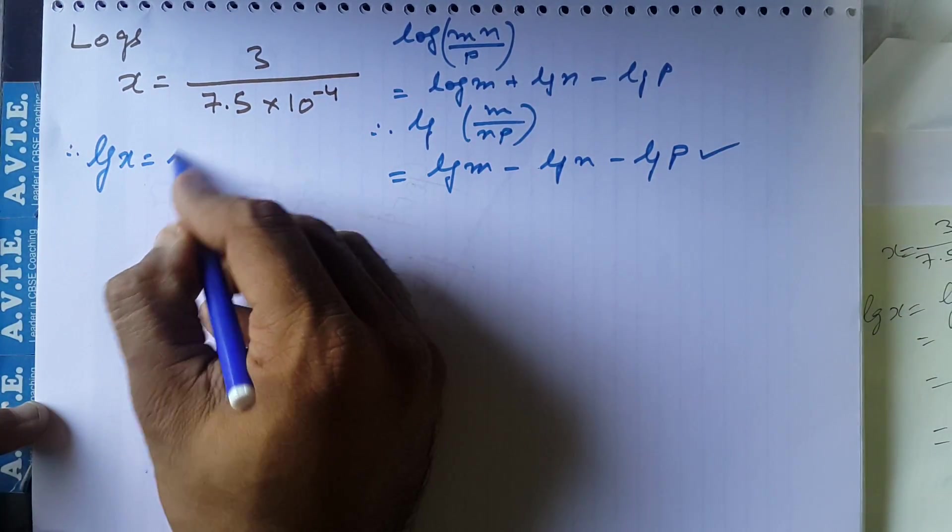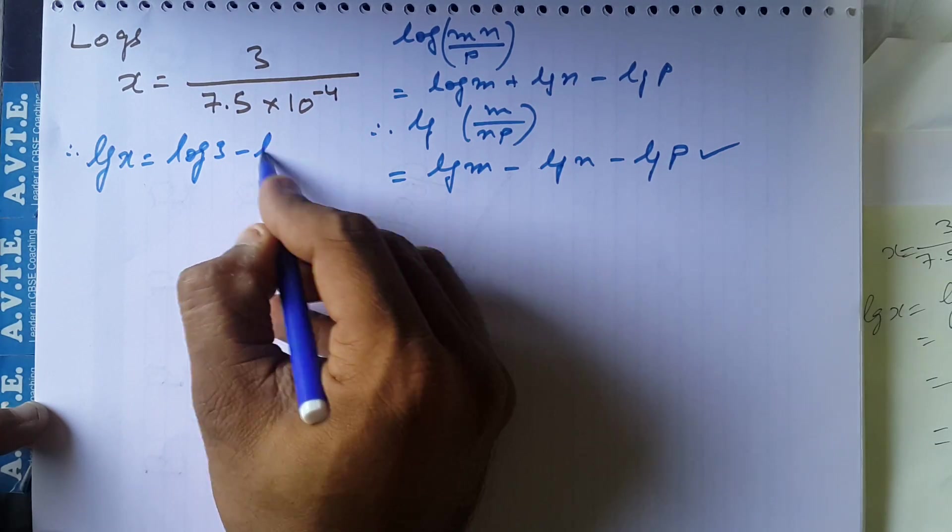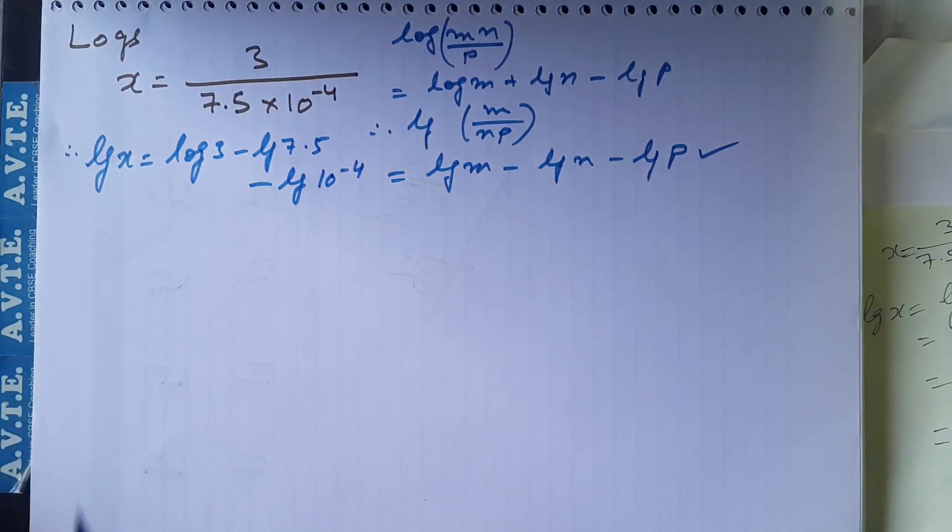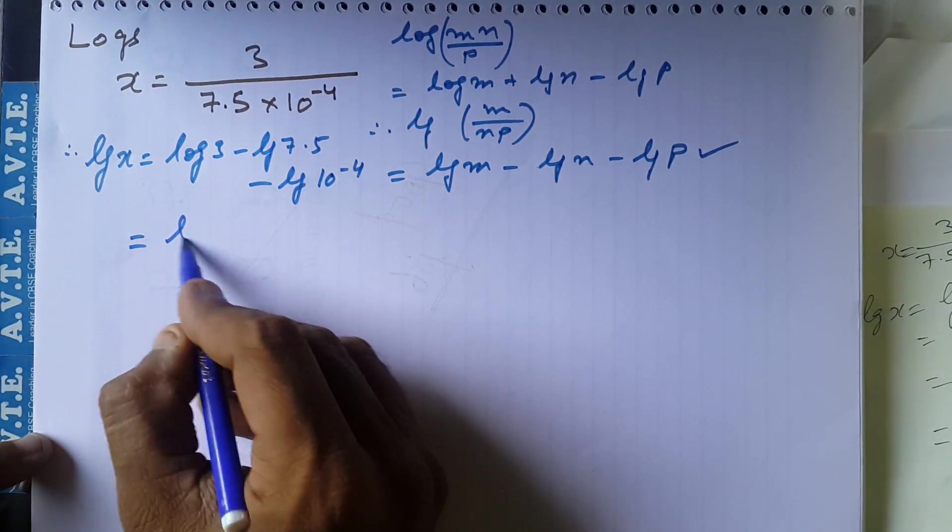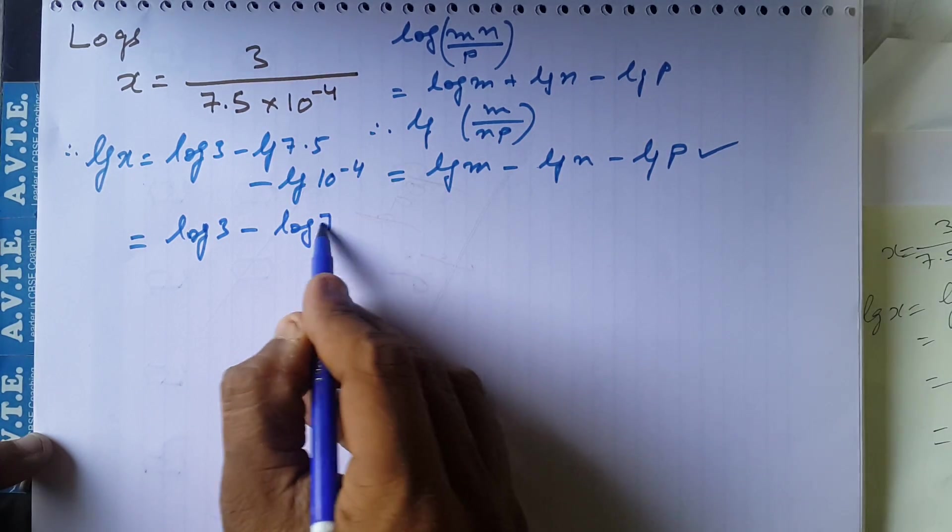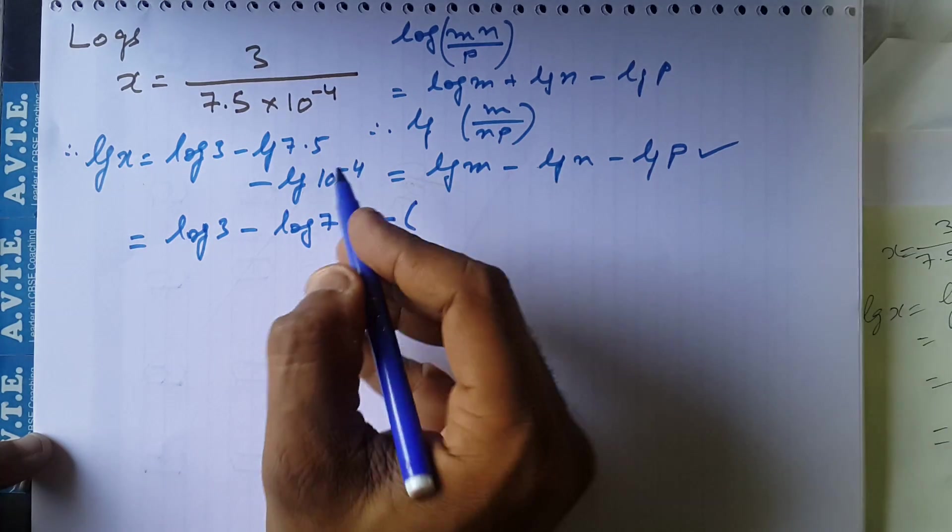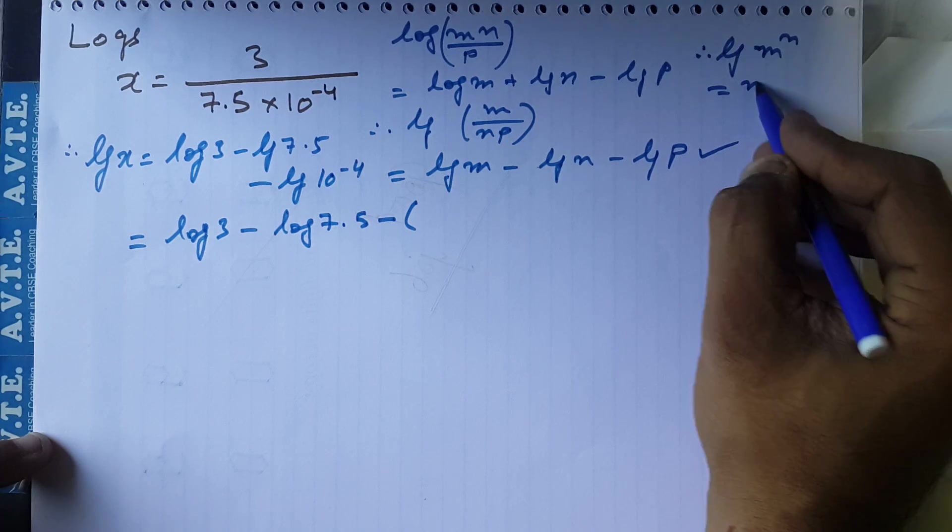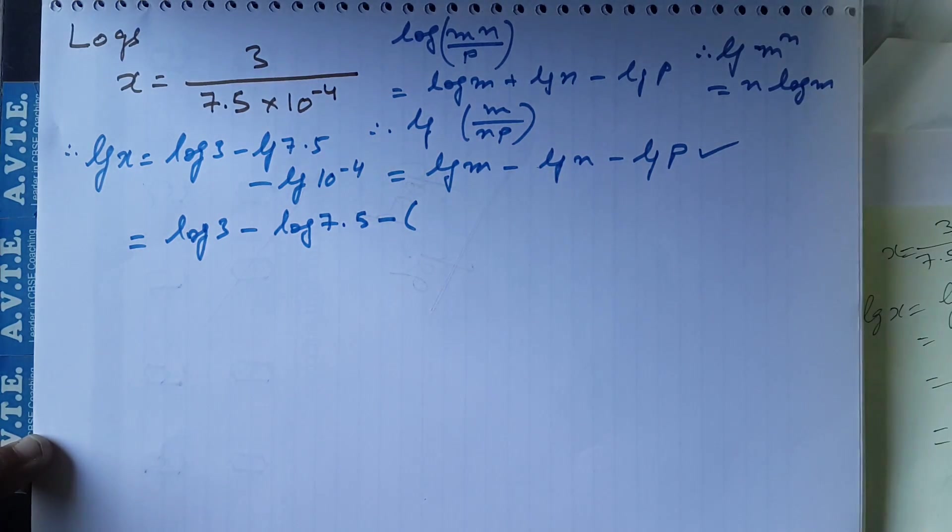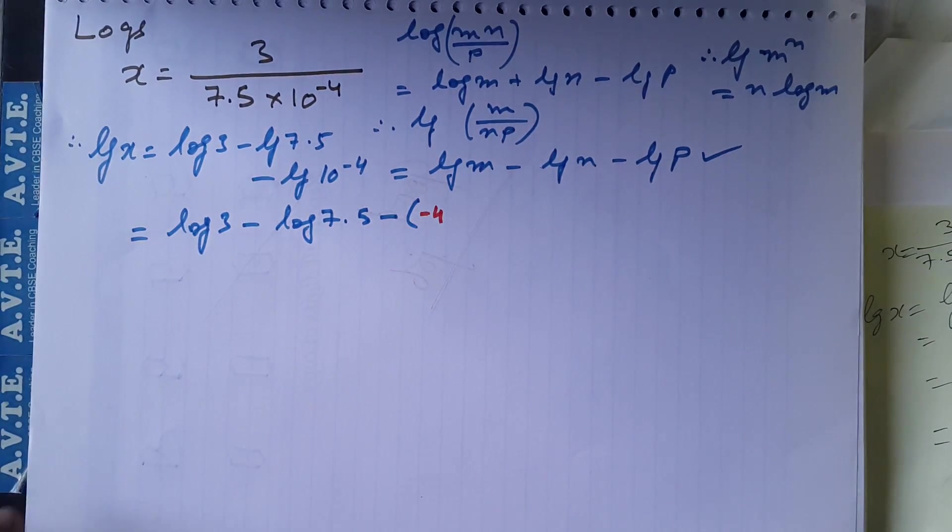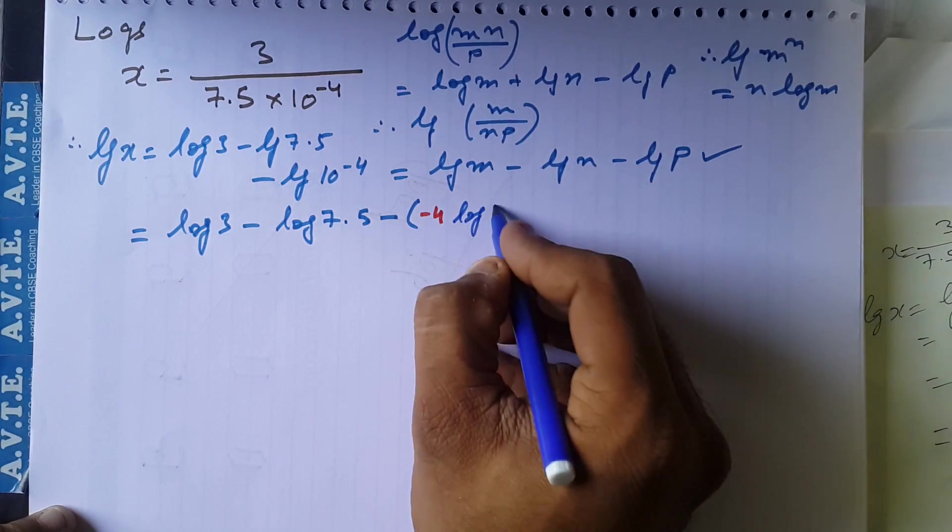Log of x is equal to log of 3 minus log of 7.5 minus log of 10 raise to minus 4. So this is log of 3, this is log of 7.5. This is a property: log m raised to power n is n log m. So what we do here? This is written as minus 4 log of 10.